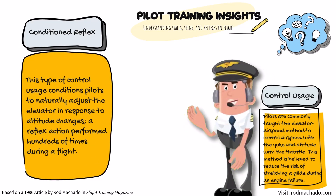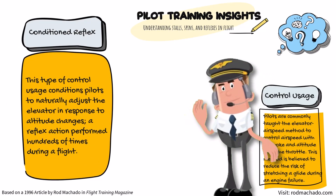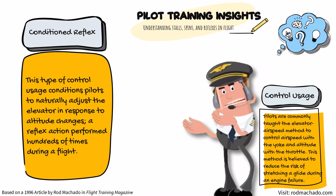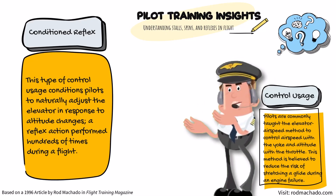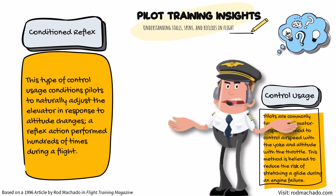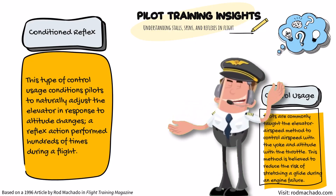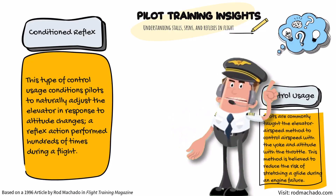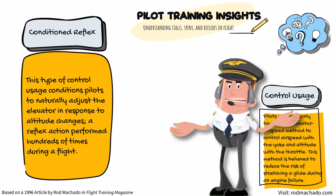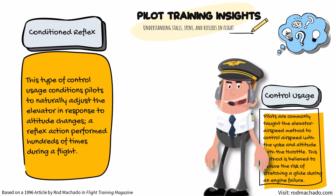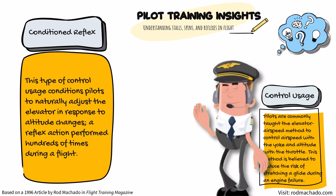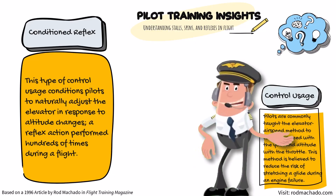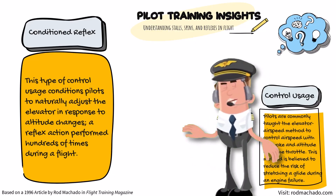Every turn requires a slight pull on the elevator to prevent an altitude loss, and we make hundreds of turns, great and small, on every flight. We even pull back on the elevator to meet the ground at an acceptable angle during the landing flare. The list goes on and on. With each rep, your brain is saying: if the altitude changes, then pull or push on the yoke to return to the targeted altitude.